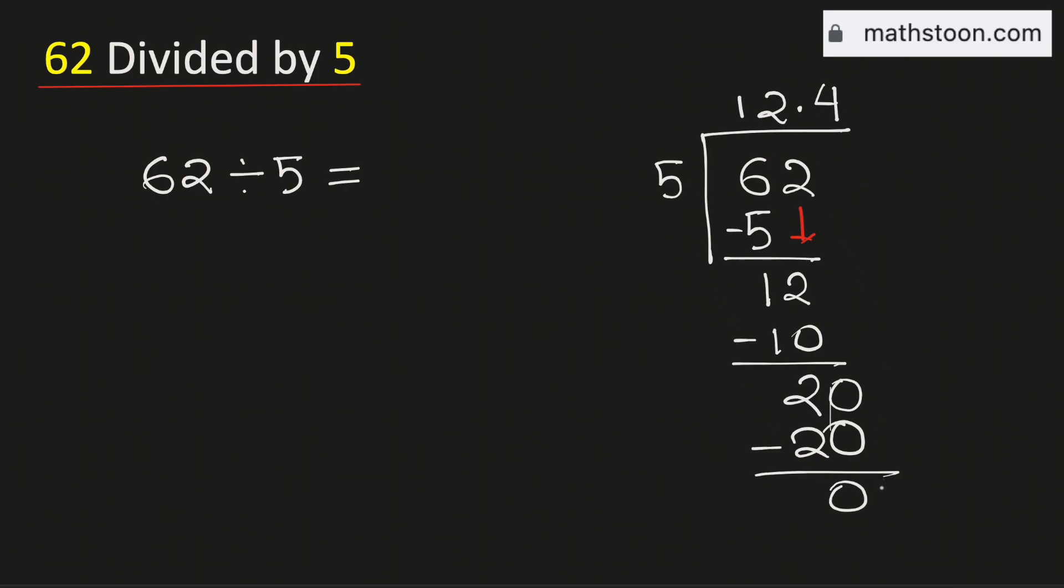As there is no number to bring down here and we have obtained the number 0, so we will stop. Therefore 62 divided by 5 is equal to 12.4 and this is our final answer.